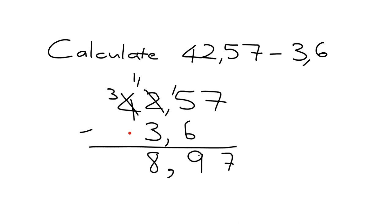And then lastly, I've got 3 here, and I've got nothing in the tens place here. So it's 3 minus 0, which is 3. And I get my answer of 38,97.